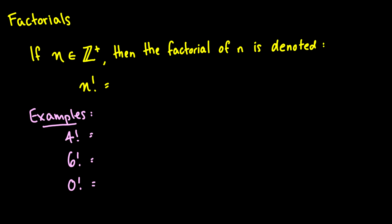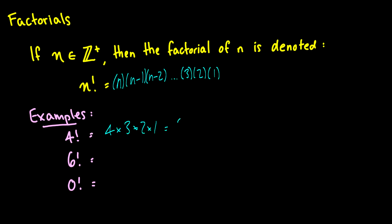If we have a number n which is a positive integer, then the factorial of n is denoted as n times n minus 1 times n minus 2, all the way down to 1. So you multiply the number by the number below and then below that until you get to 1. So as some examples, we have 4 factorial which is the same thing as 4 times 3 times 2 times 1, which is 24.